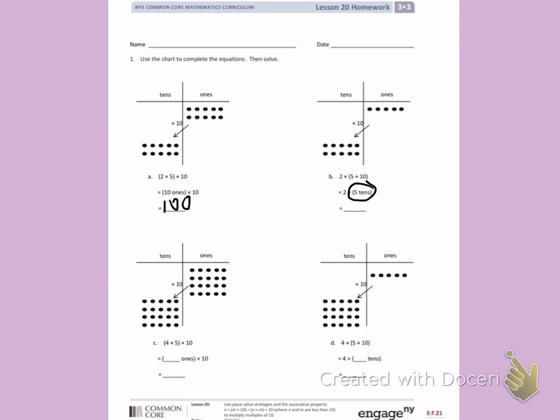Another way of saying 5 ones is 50. So, I am multiplying 2 times 50.